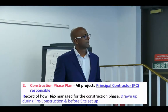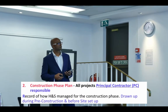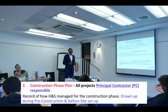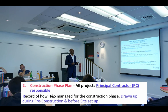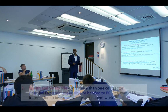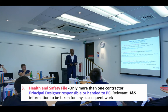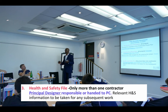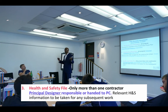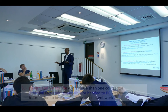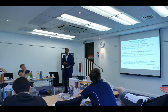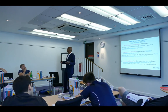The second document is the construction phase plan, managed by the principal contractor — covering how you are managing the whole construction phase. Finally, the health and safety file is pulled together to hand over to the client. The first two documents will cease to exist after the project is completed — the job is finished, you don't need them.